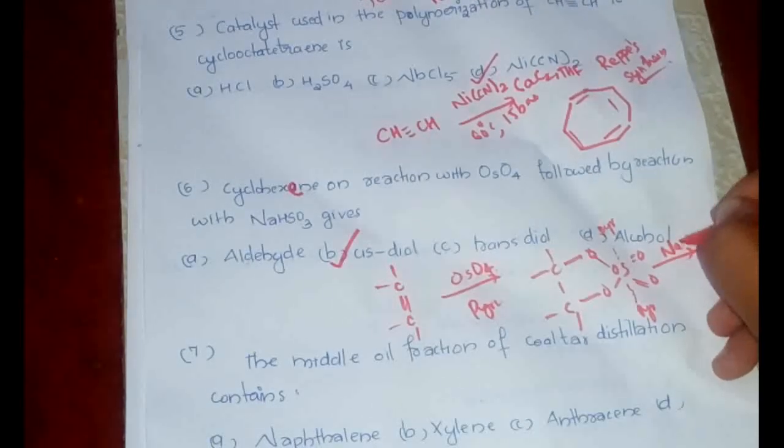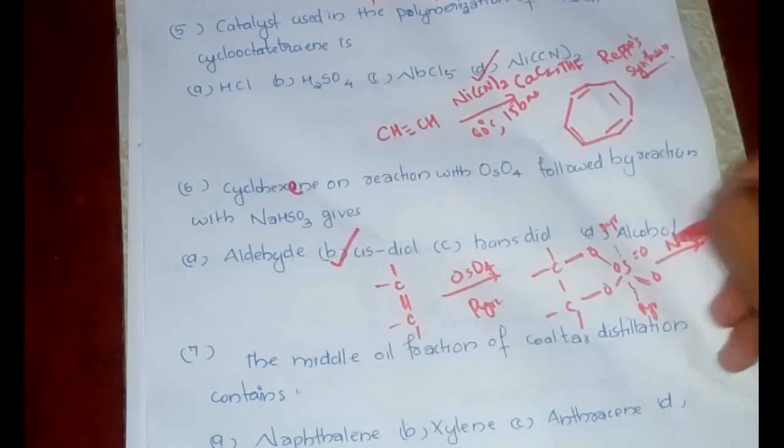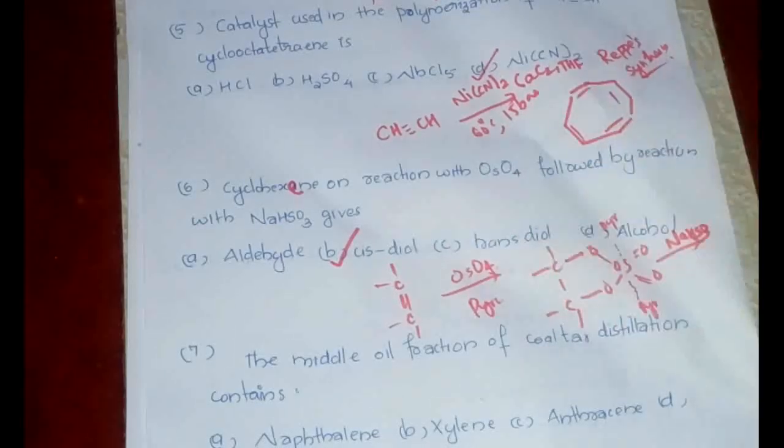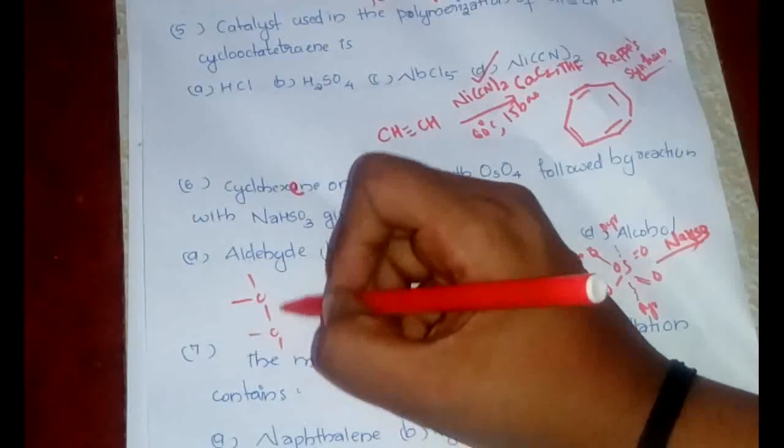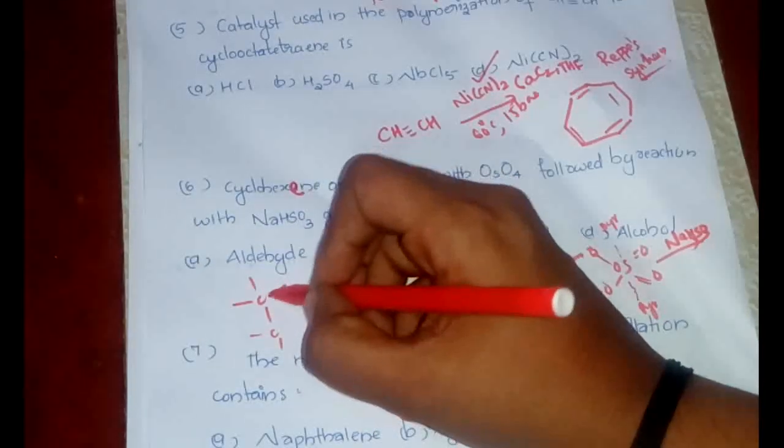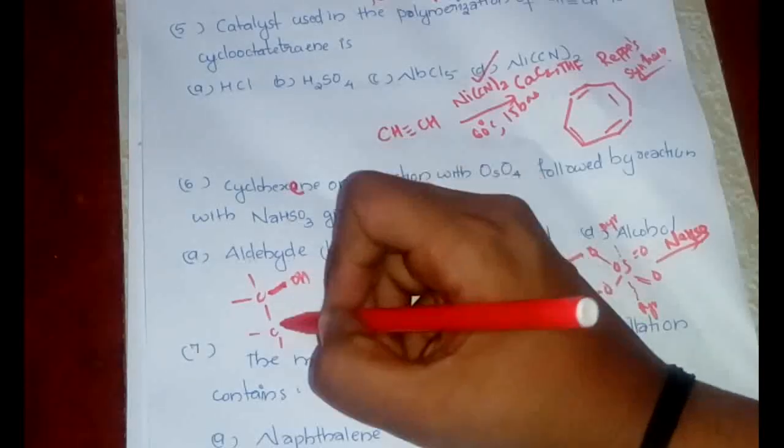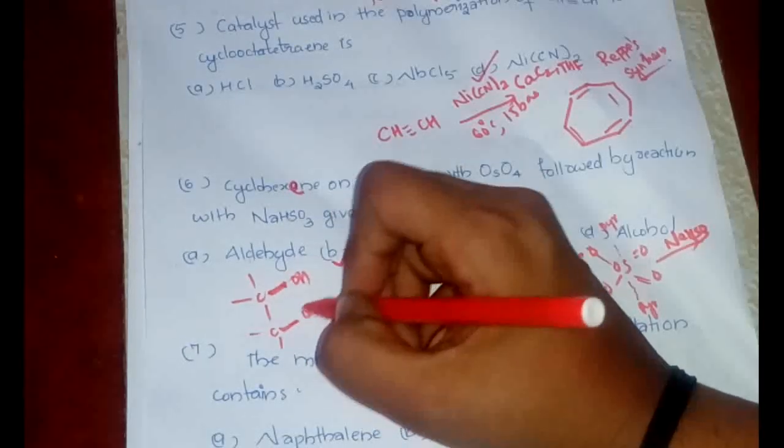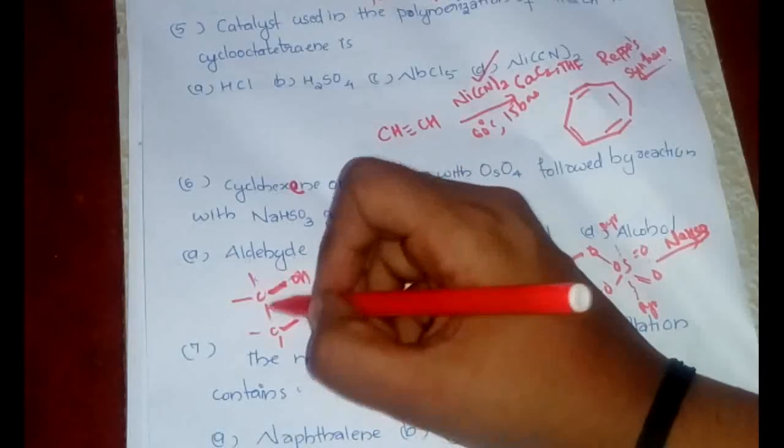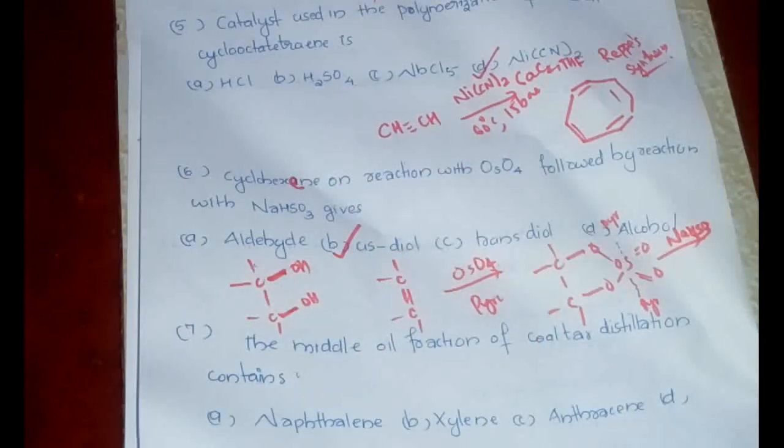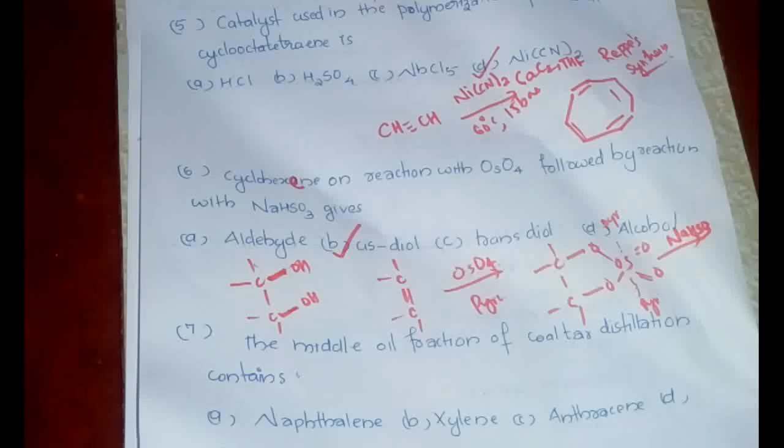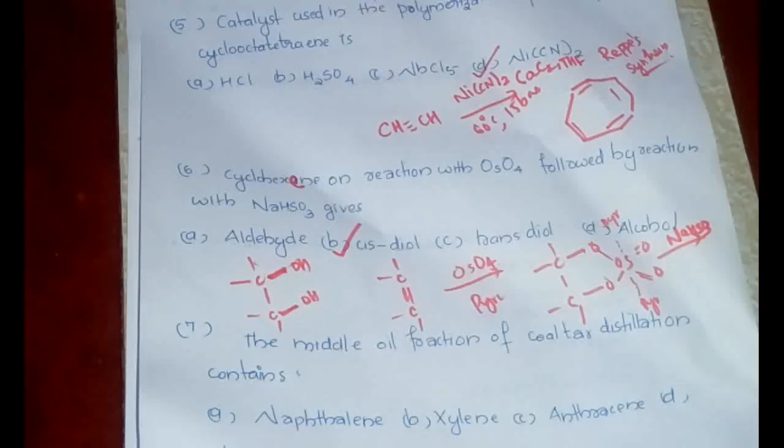Further, on reacting with NaHSO3, it will be forming cis-diol. I will write the product here. If this is darkened, that is above the plane, then 1, 2, 3, 4, this one also will be above the plane. If the other one is below the plane, one of the OH is below the plane, the second OH also will be below the plane. So they will be in the same plane or they will be cis-diols.